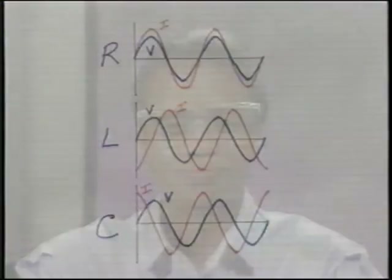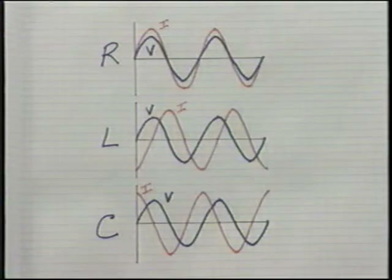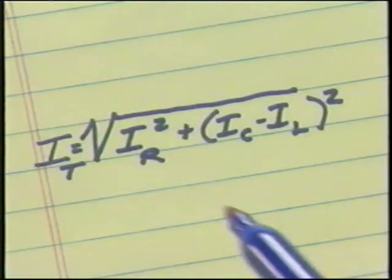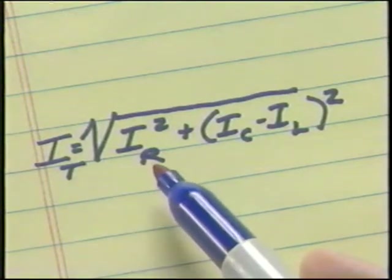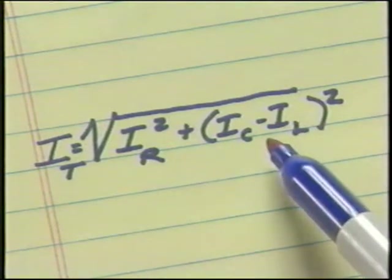You now know how to calculate the total reactive current in a parallel RLC circuit. To find the total current, the 90-degree phase relationship between the total reactive current and the resistive current must be taken into account. I sub T is equal to the square root of I sub R squared plus the square of the quantity I sub C minus I sub L.